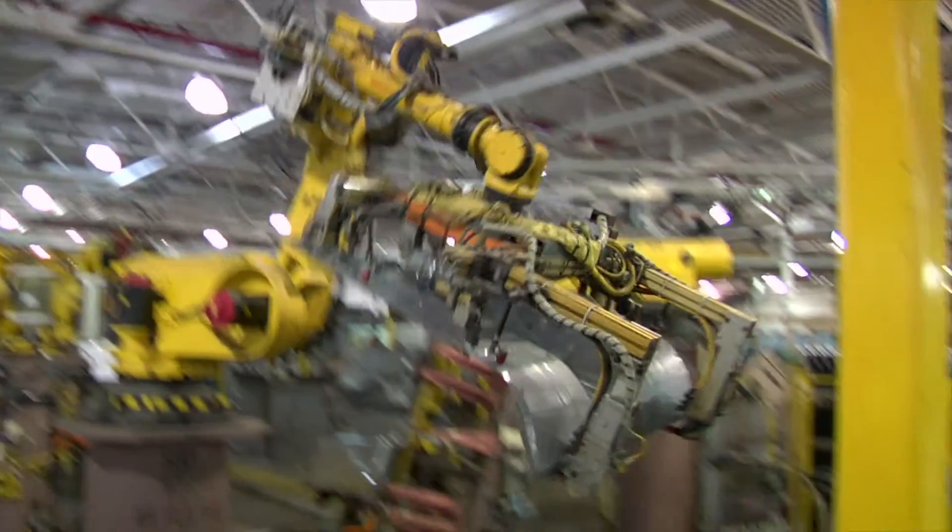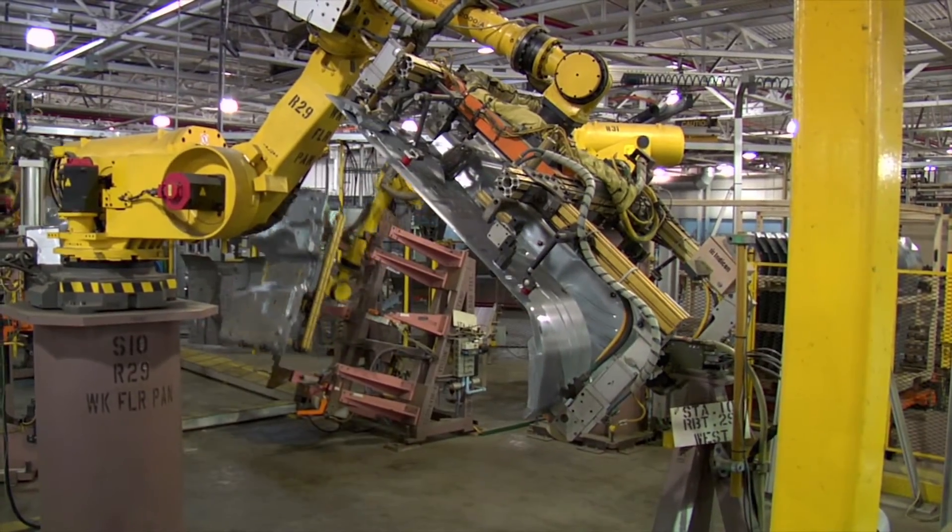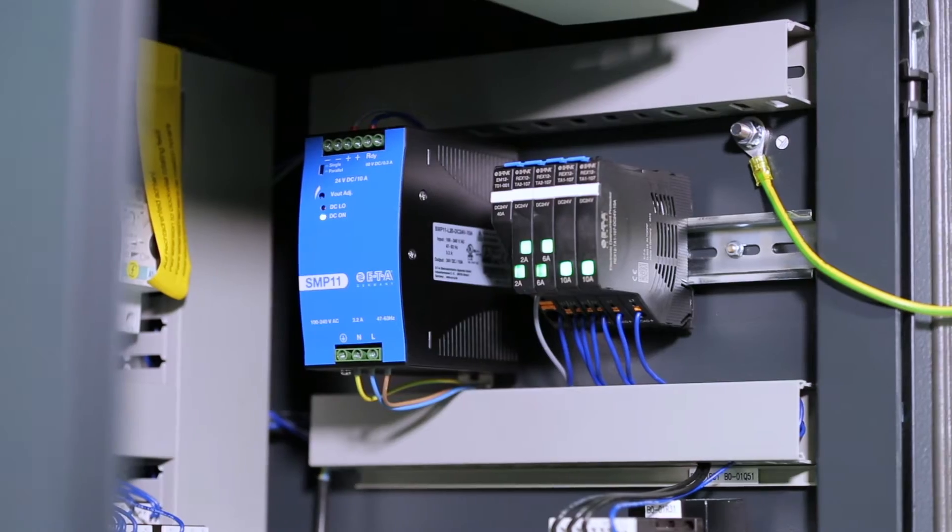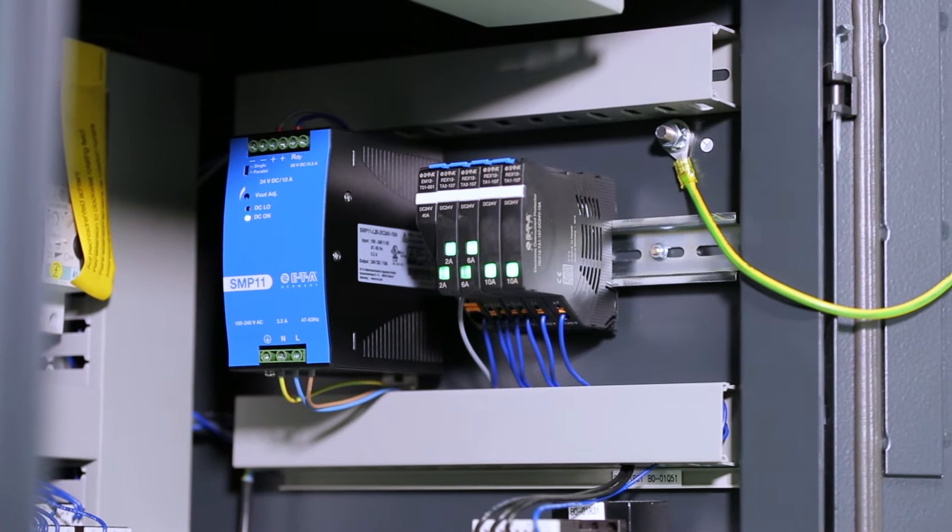Electronic overcurrent protection in DC 24 volt applications provides fast detection and resolution of overcurrent and short circuits. This significantly increases productivity.